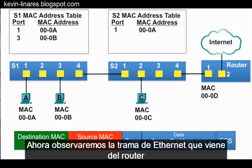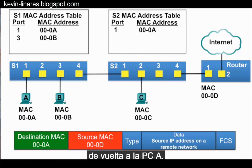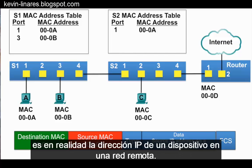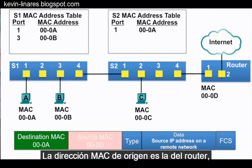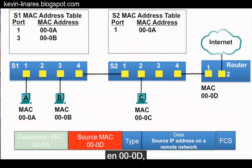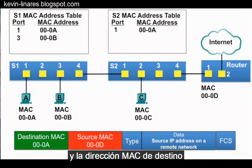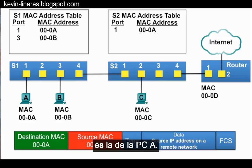Now we'll look at the Ethernet frame coming from the router back to PCA. The source IP address is actually that of a device on a remote network. The source MAC address is that of the router at 000d, and the destination MAC address is that of PCA.